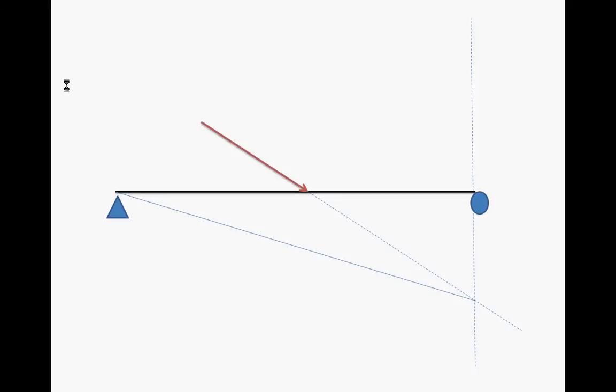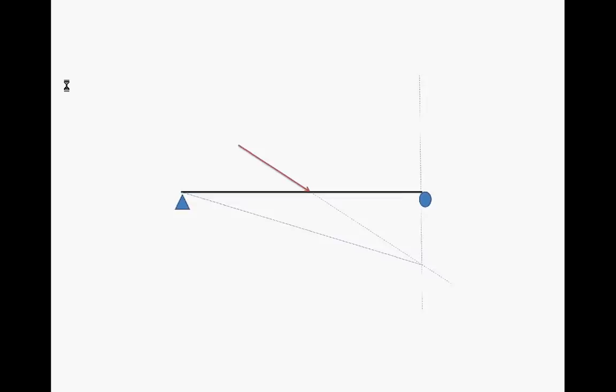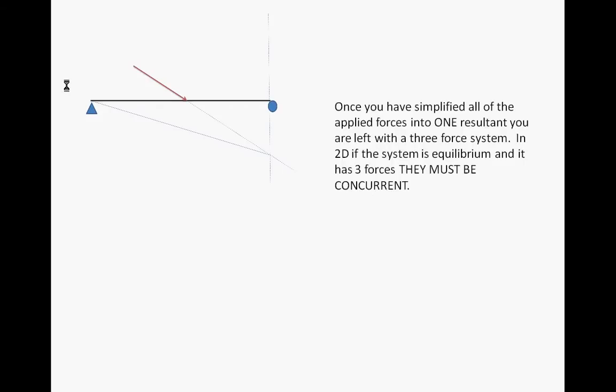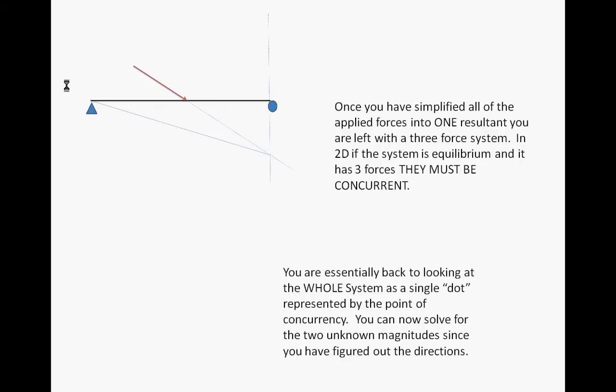Once you've figured out that point and you can figure it out algebraically, graphically, trigonometrically, but we're looking at it graphically. Once you've figured out that point, you just use these simple facts. If it's a 2D system and it is in equilibrium and it has three forces, the forces must be concurrent. So if you find the point of concurrency of two points, then you know the other line of force.